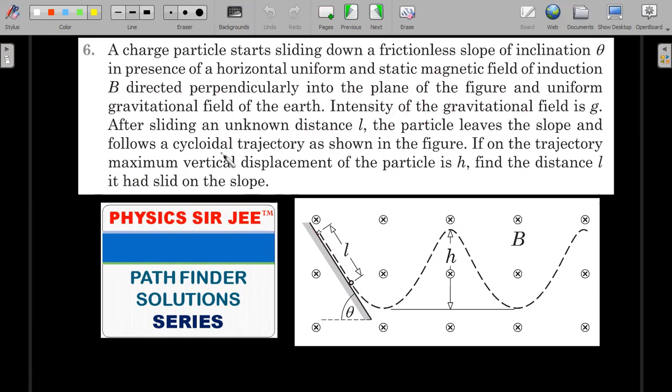After sliding an unknown distance l, the particle leaves the slope and follows a cycloidal trajectory, as expected because there is magnetic and gravitational field. If on the trajectory maximum vertical displacement of the particle is h, find the value of this unknown distance l it had slid on the slope.